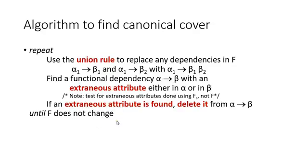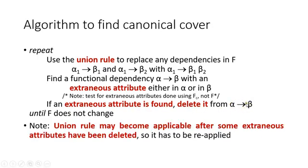Now let us go through the algorithm to find the canonical cover. We repeat the following steps. First, use the union rule to replace any dependencies alpha1 determines beta1 and alpha1 determines beta2 with alpha1 determines beta1 beta2. Second, find a functional dependency alpha determines beta with an extraneous attribute either in alpha or in beta. Third, if an extraneous attribute is found, delete it from alpha determines beta. Repeat until F does not change. Note that the union rule may become applicable again after some extraneous attributes are removed, so it must be reapplied.